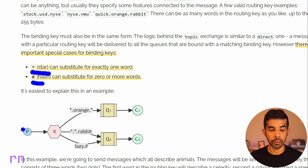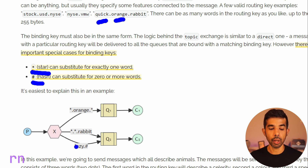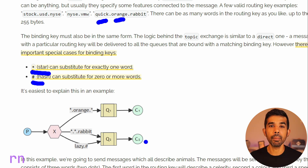In this example, there is a producer and multiple consumers. Based on the message routing key, a wildcard on this binding — star.orange.star — takes any messages that have orange in the middle with one word before and one word after. Those messages are sent to Q1 and picked up by consumer 1. Q2 has two bindings: star.star.rabbit delivers a quick orange rabbit to Q2. Any message with a routing key starting with lazy followed by multiple words will also be sent to Q2 via the hash wildcard. Let's look at this when building a .NET application.